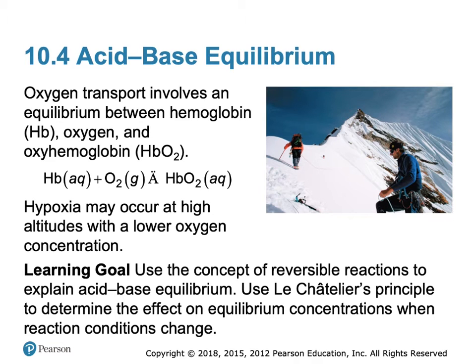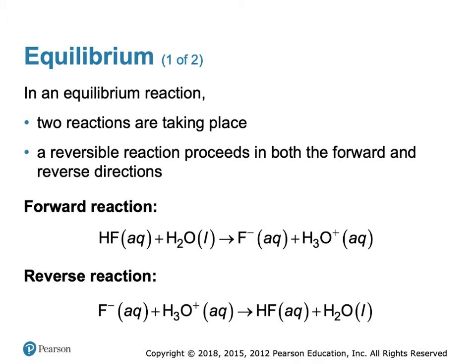In this video, we're going to explore a concept known as equilibrium in terms of acids and bases. In equilibrium, there are two reactions taking place. A reversible reaction proceeds in both the forward and reverse directions. When we were looking at our conjugate acid-base reactions, you could see that we had two arrows — one in the forward direction and one in the backward direction.